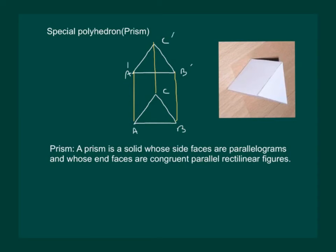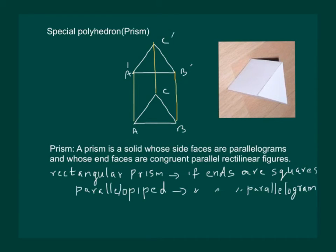Also, depending on the polygon used as the end faces, a prism can be classified as rectangular prism if ends are squares, pentagonal prism if the ends are pentagons, and so on.